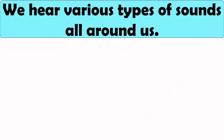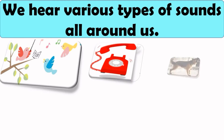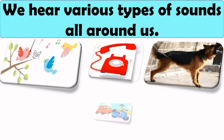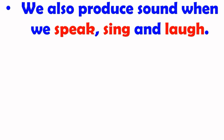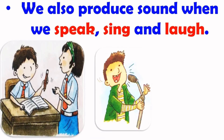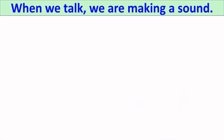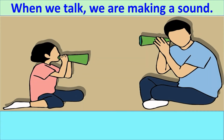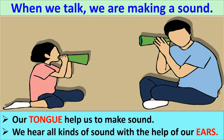In our daily life we hear different types of sounds like chirping of birds, ringing of phone, barking of dog, honking of horns, and the list is endless. We also produce sound when we speak, sing and laugh. When we talk we are making sound. Our tongue helps us to make sound. We hear all kinds of sound with the help of our ears.